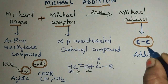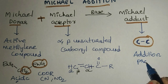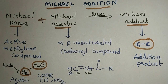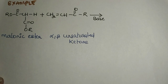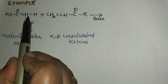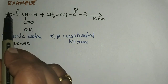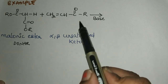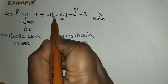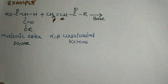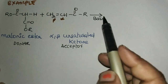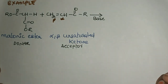Let's explain with an example. Malonic ester acts as the Michael donor because it has an active methylene CH₂ group attached to two carboxylic ester groups — two electron-withdrawing groups. The alpha-beta unsaturated ketone acts as the Michael acceptor, where this is the alpha carbon and this is the beta carbon. The reaction occurs between the Michael donor and acceptor in the presence of a base to give an adduct.